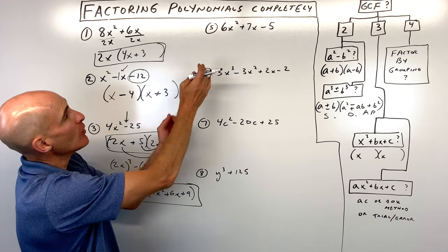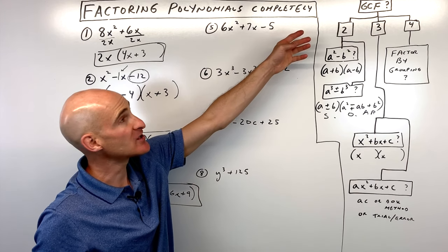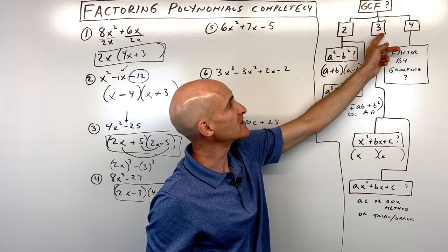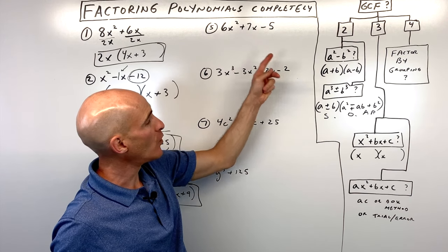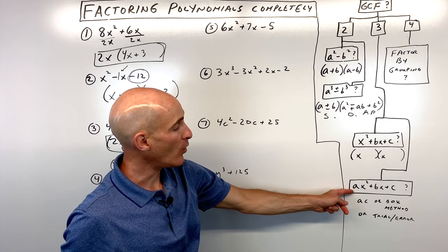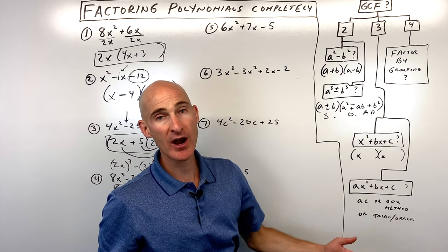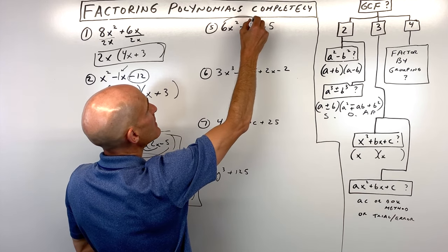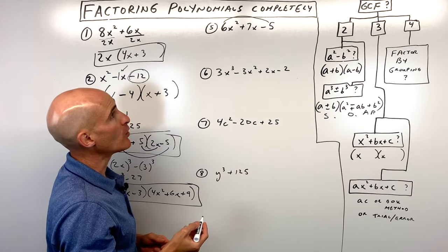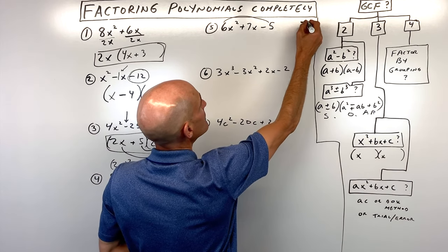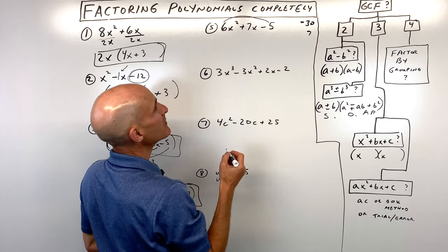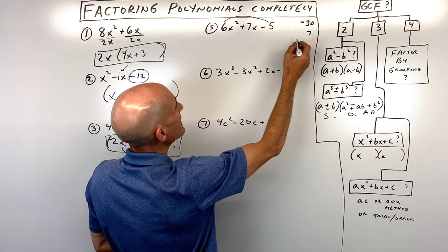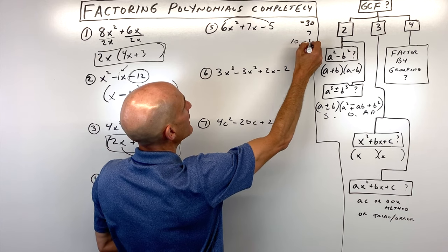Number five, we've got 6x squared plus 7x minus 5. First step: greatest common factor — doesn't look like there is one. How many terms? Three. Is the leading coefficient 1? No, the leading coefficient is not 1. So we're going to use the AC method, box method, trial and error, etc. Let's do the box method. We're going to say a times c: 6 times negative 5 is negative 30. What two numbers multiply to negative 30 but add to 7? That's going to be 10 and negative 3.